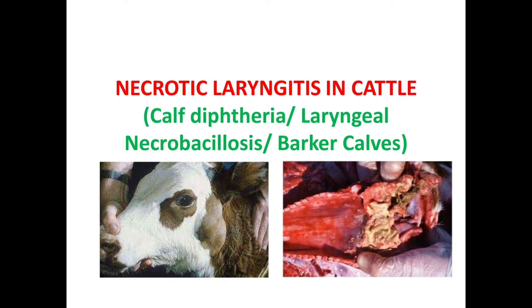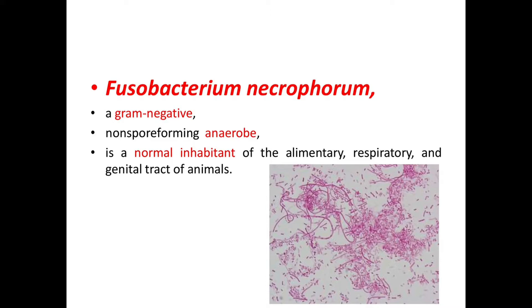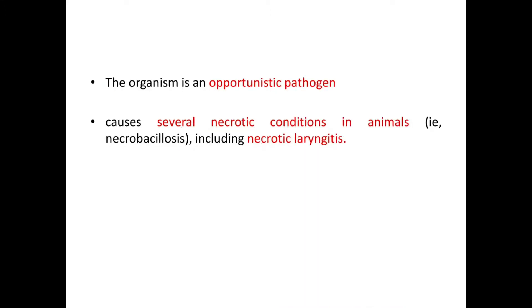This disease is called calf diphtheria, necrotic laryngitis, laryngeal necrobacillosis, or barker calves — these are all names of the same disease. The causative organism is Fusobacterium necrophorum, a gram-negative, non-spore-forming anaerobe that is a normal inhabitant of the alimentary, respiratory, and genital tract of animals. The organism is an opportunistic pathogen and causes several necrotic conditions in animals, including necrotic laryngitis.